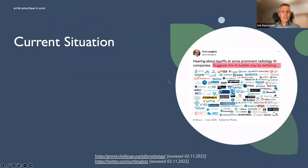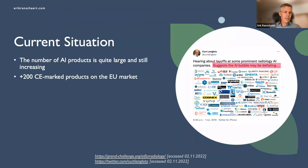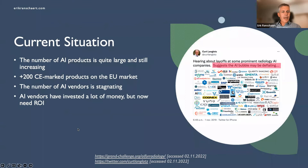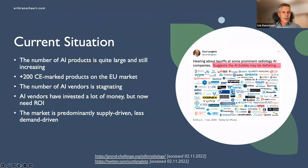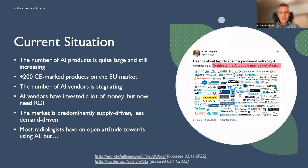The current situation in the market: the number of AI products is quite large and still increasing — we now have more than 200 commercial products available with the CE mark. However, the number of vendors is stagnating. This is a critical moment because vendors need a return on investment. The market is predominantly supply-driven, with demand staying a little behind. Most radiologists have an open attitude towards AI, but implementation is generally slower than expected.